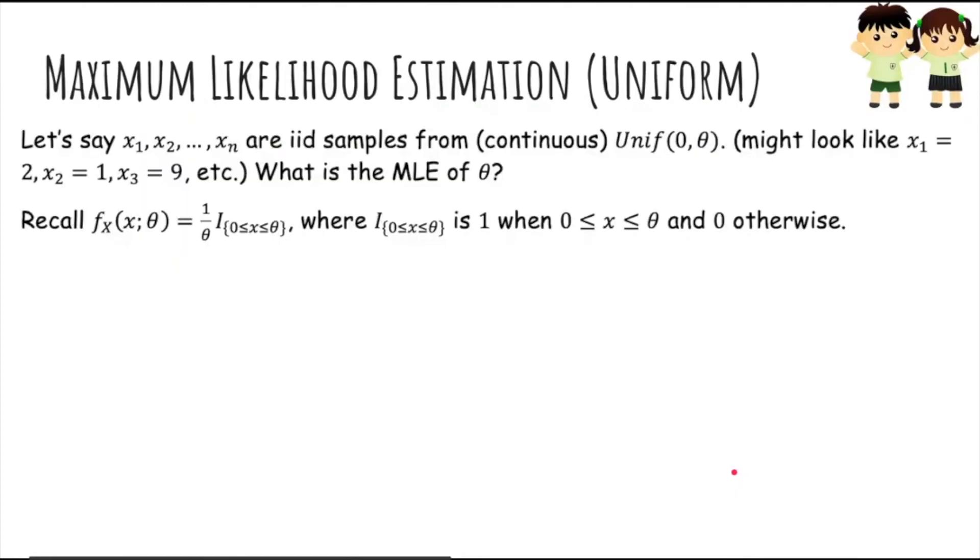Okay now let's do another example, the uniform. So if x1 through xn are instead iid samples from a continuous uniform distribution from zero to theta, then what is the MLE of theta? Well again, recall the density of the uniform is 1 over theta times the indicator of x being between 0 and theta. Notice that the indicator is 1 when x is between 0 and theta and it's 0 if x is outside that range. So now again we write the likelihood of the data x given the parameter theta. We take the product over all data points of the density at that data point xi given theta, and then plug in the density of the uniform here.